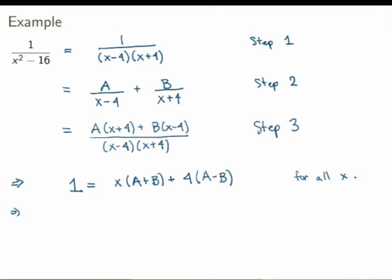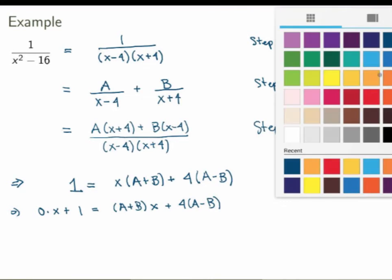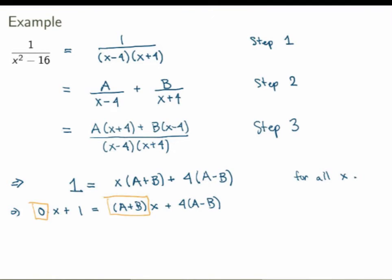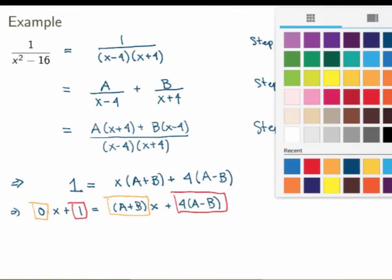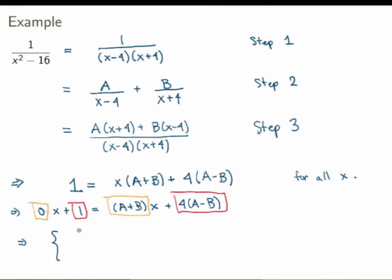When two polynomials must be equal for all x, the coefficients of each power of x must be exactly equal. On the left side I only have a constant term, which I can write as 0 times x plus 1. On the right side I have (a plus b) times x plus 4 times (a minus b). Matching coefficients gives a system of two equations: 0 equals a plus b, and 1 equals 4 times (a minus b).